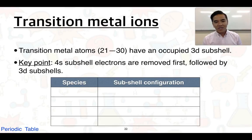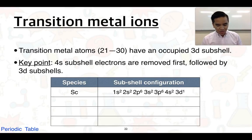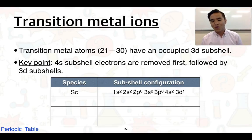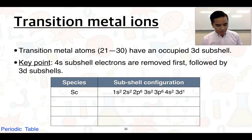Transition metals can form various charges, so we'll see a range of ions from one particular element. We're going to deal with scandium. Its electron configuration is 1s² 2s² 2p⁶ 3s² 3p⁶ 4s² 3d¹ — that's element number 21.